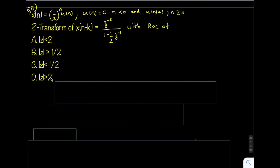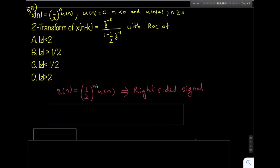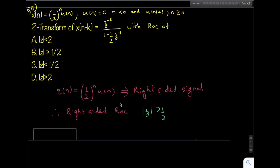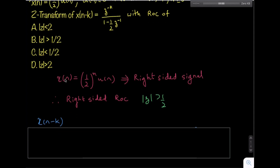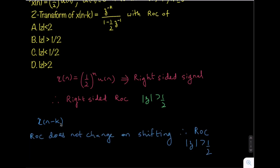x(n) = (1/2)^n · u(n) is a right-sided signal because u(n) is multiplied. For a right-sided signal, the ROC is to the right of the pole, so the ROC is |z| > 1/2. Although the ROC of x(n) itself is not what's asked, we know that shifting a signal — from x(n) to x(n-k) — does not change the ROC. Therefore, even for x(n-k), the ROC remains |z| > 1/2, and option B is the correct answer.